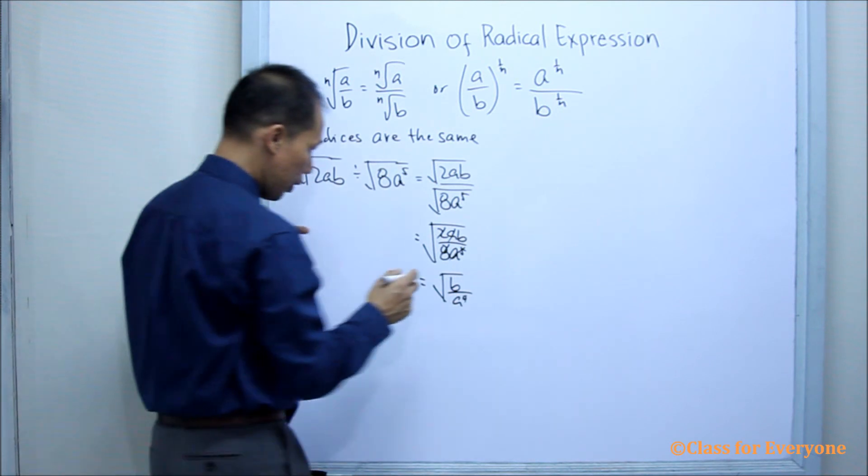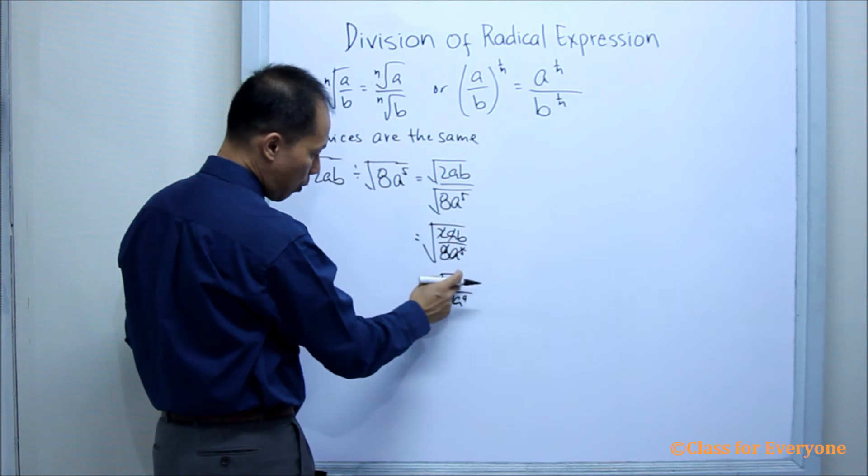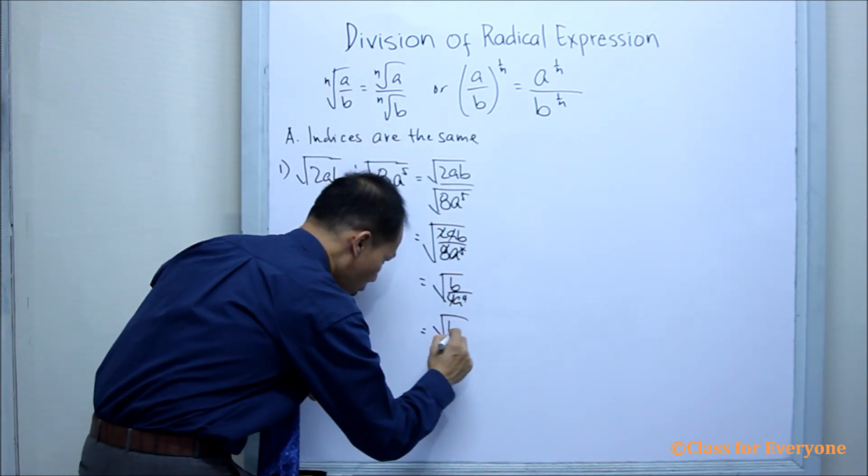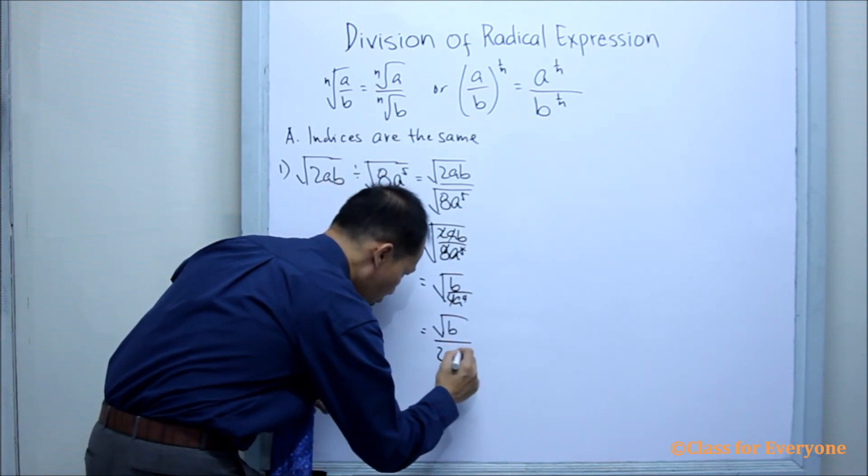Now, of course, there's still a 4 here. So, getting the square root of both the numerator and denominator, we'll have the square root of b over 2a squared.